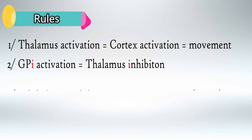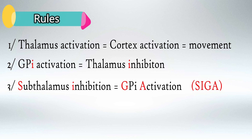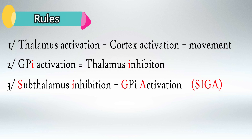Rule number 3: subthalamic nucleus inhibition will cause globus pallidus internus activation. Memorize the word SEGA — S for subthalamic nucleus, I for inhibition, G and A for globus pallidus internus activation. And vice versa, subthalamic activation will cause globus pallidus internus inhibition.